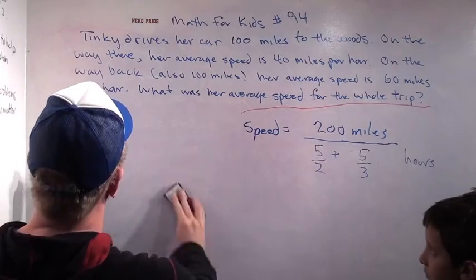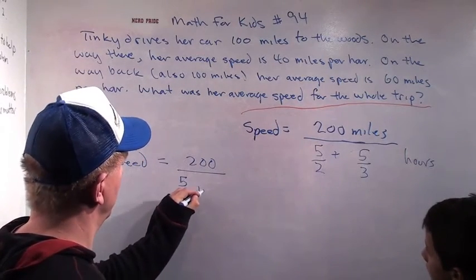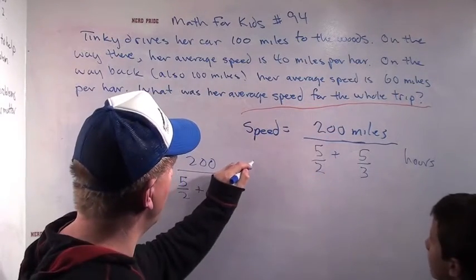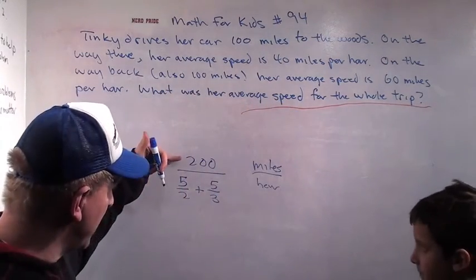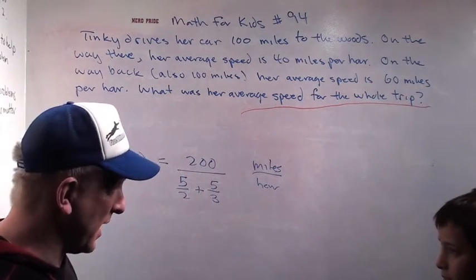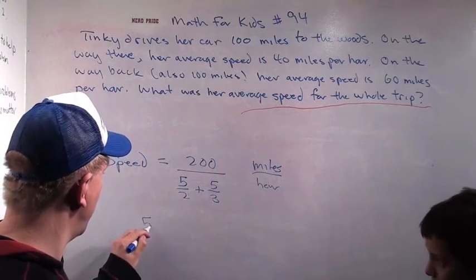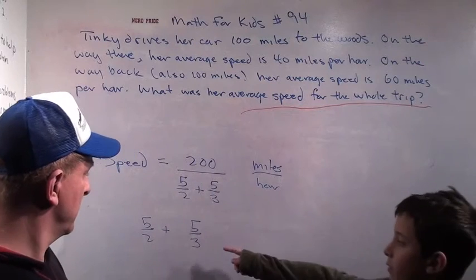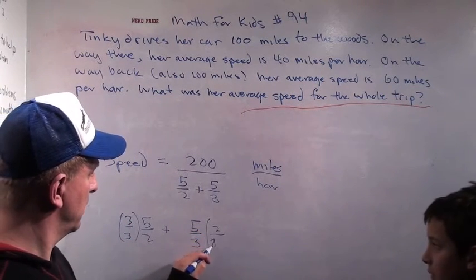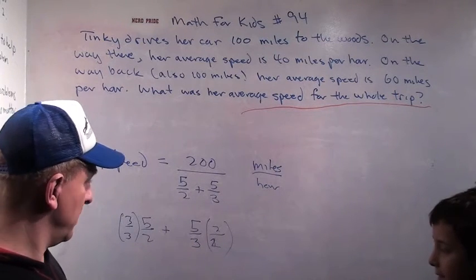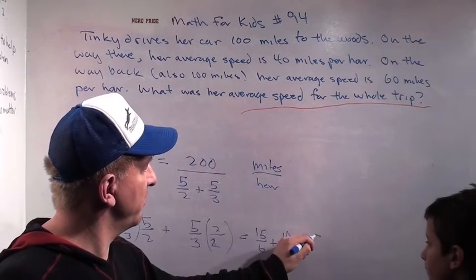We get all the way back to our beginning equation, which says the speed for the trip equals 200 divided by 5 halves plus 5 thirds, and this is going to be miles per hour. We've got to figure out what 5 halves plus 5 thirds is. Add 5 halves and 5 thirds first — when you have adding on the bottom, you've got to do that first. You multiply by 3 over 3, that's 15 sixths; and multiply by 2 over 2, which is 10 sixths. We get 15 sixths plus 10 sixths, which is 25 over 6.